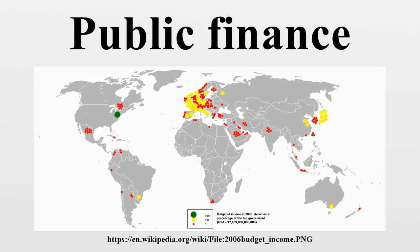Government expenditures are financed primarily in three ways: government revenue taxes and non-tax revenue, government borrowing, and printing of money or inflation. How a government chooses to finance its activities can have important effects on the distribution of income and wealth and on the efficiency of markets. The issue of how taxes affect income distribution is closely related to tax incidence, which examines the distribution of tax burdens after market adjustments are taken into account. Public finance research also analyzes effects of the various types of taxes and types of borrowing as well as administrative concerns, such as tax enforcement.